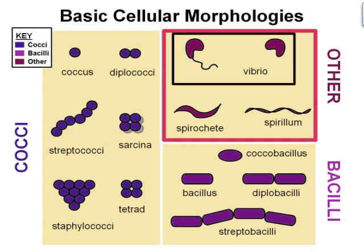To begin, let's discuss some basic bacterial cell morphology. The morphologies shown in this figure are not all-encompassing; they are just the most common. The figure is split into three sections based on cell shapes. Section 1 on the left lists common cocci. Cocci is plural for coccus, which means sphere. Cocci may be true spheres, for example staphylococci, helmet-shaped, for example pneumococci, or kidney-shaped, for example Neisseriae. They may occur alone, in pairs, or in groups.